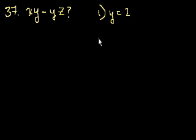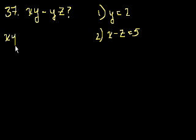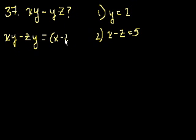So that alone doesn't help. Statement 2 is x minus z is equal to 5. Now this is interesting, because this expression we can factor out the y. What happens if we factor out y of both of these expressions? Let me just rewrite it: xy minus zy. I just switched the y and the z. That equals x minus z times y.